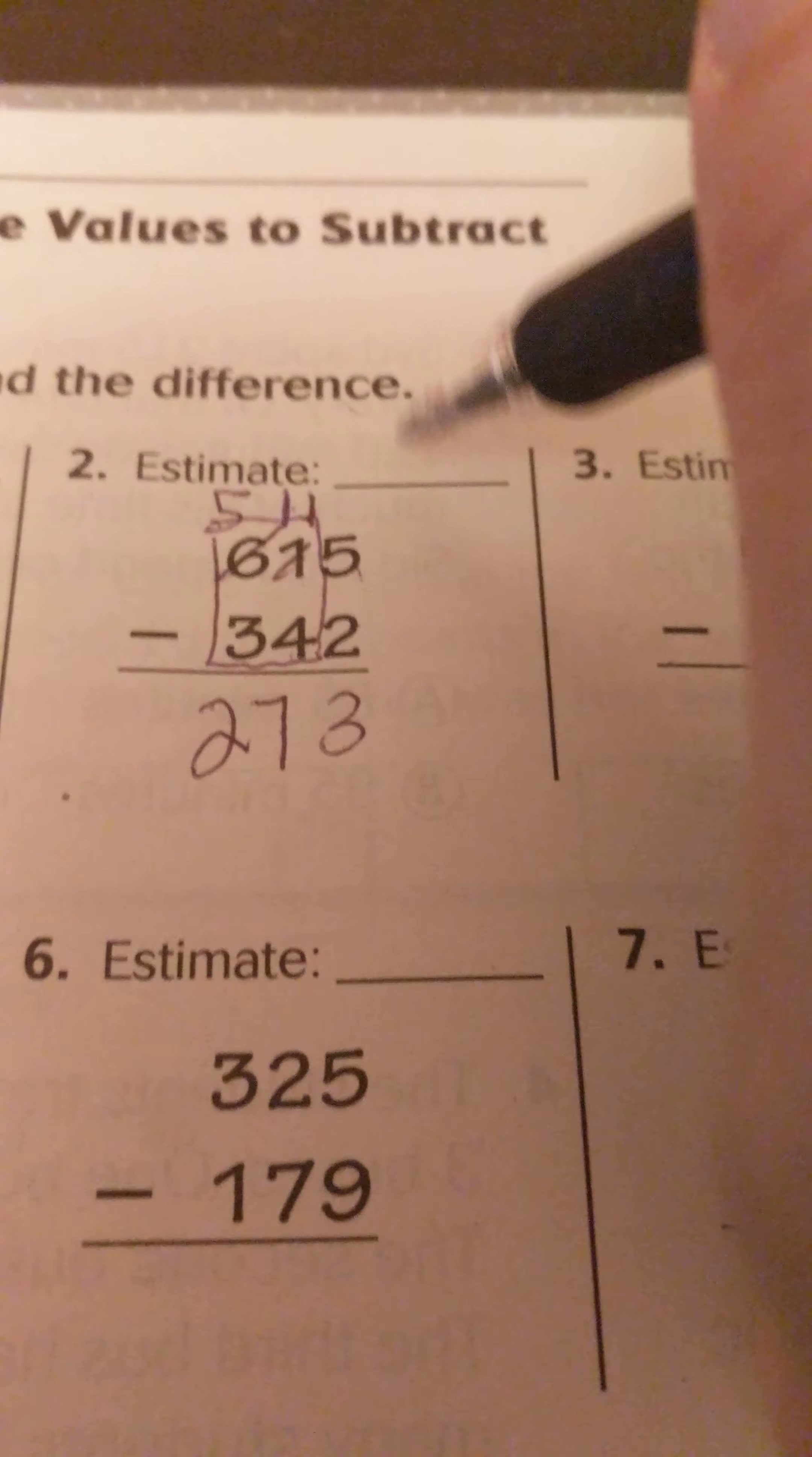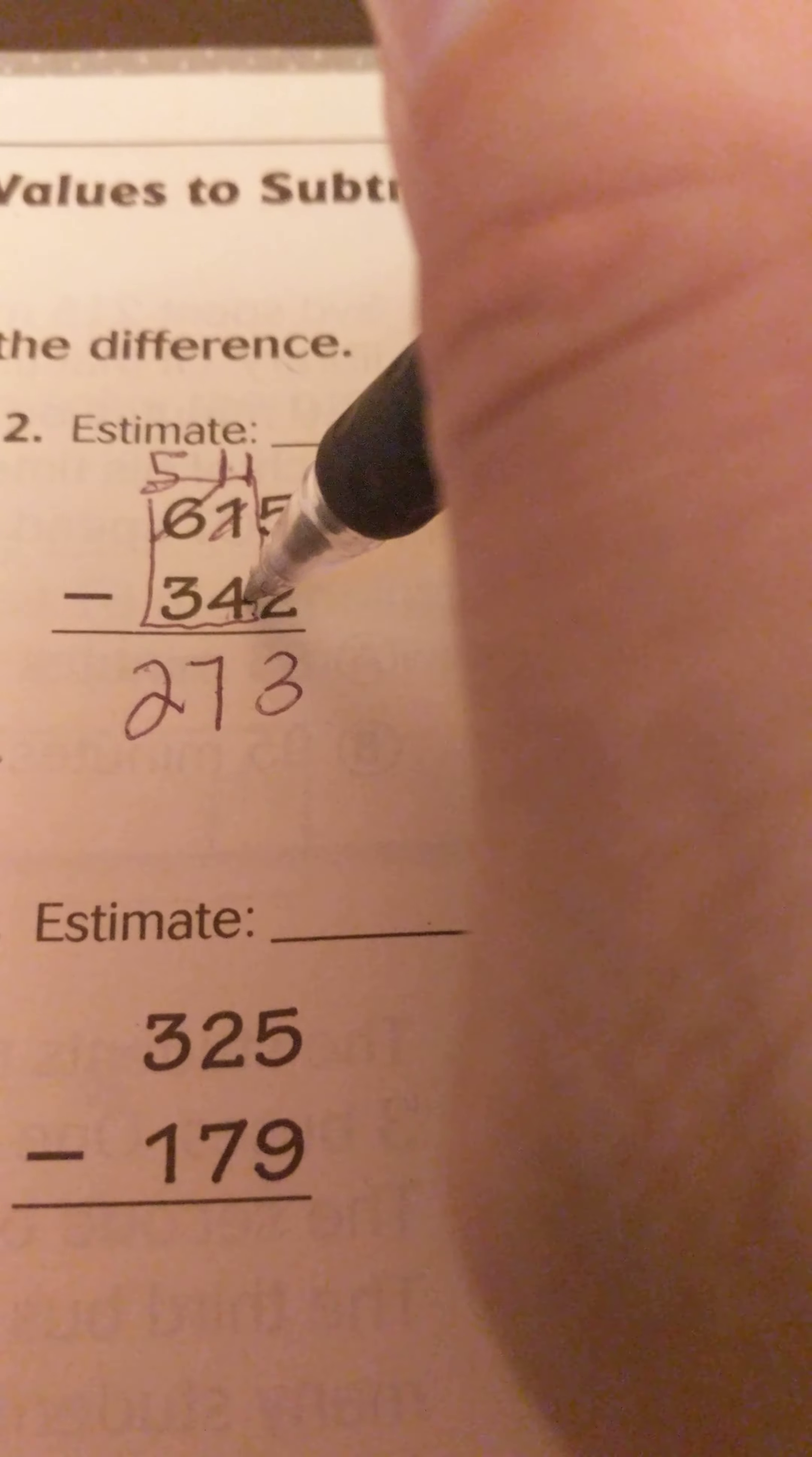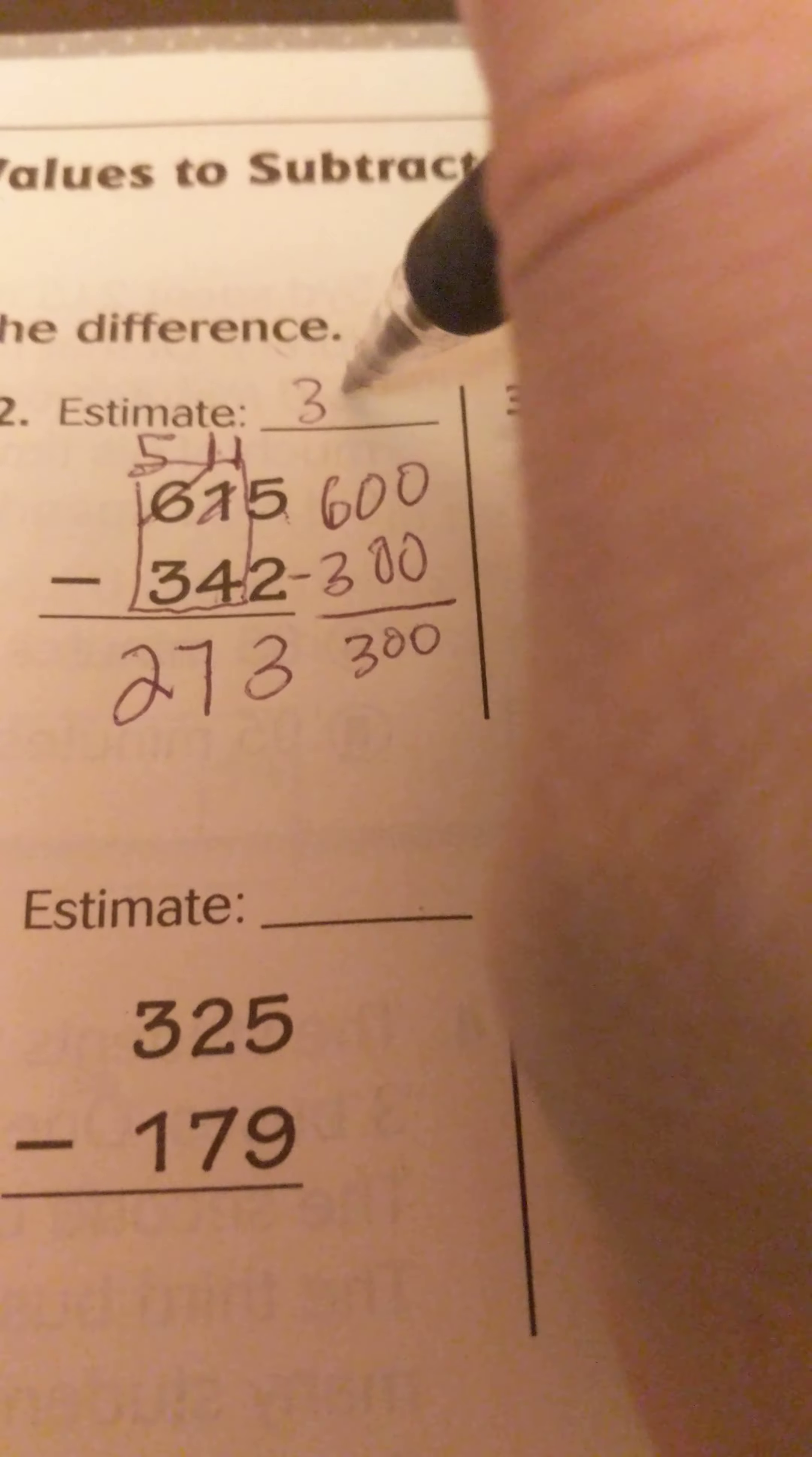I'm just showing you the estimating portion of this. So this would be 600 because there's a 1 in the tens. And this, looking at the tens here rounding to the nearest hundred, this is a 4. So this would stay 300. And that would be 300 for our estimate.